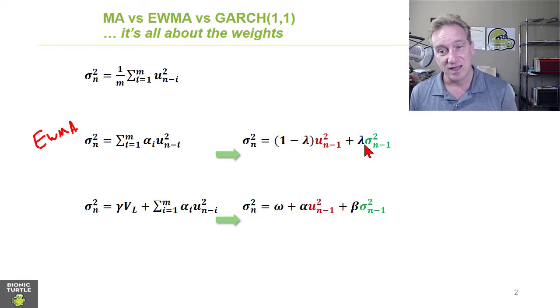weighted by lambda, which is a smoothing parameter or could be called a persistence parameter. So the greater this lambda, the more persistent this series is. And there are only two weights here. So the other weight is one minus lambda.